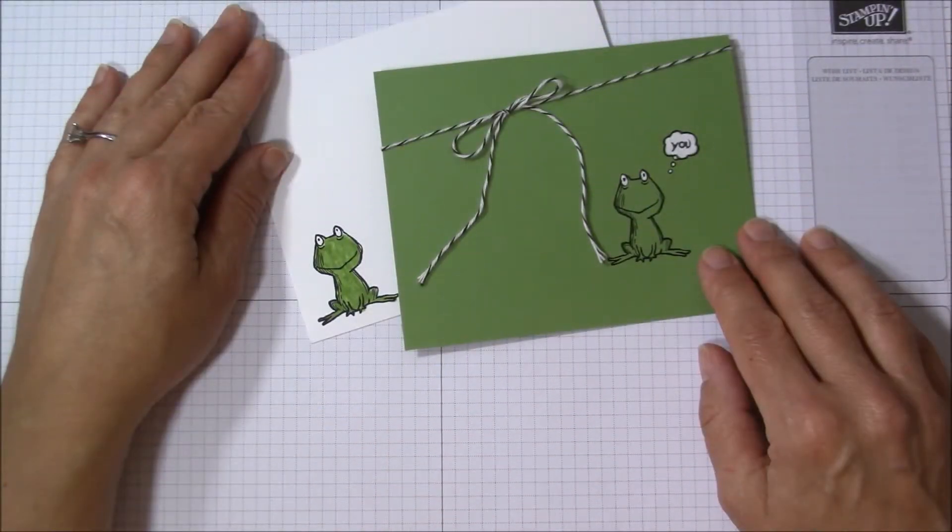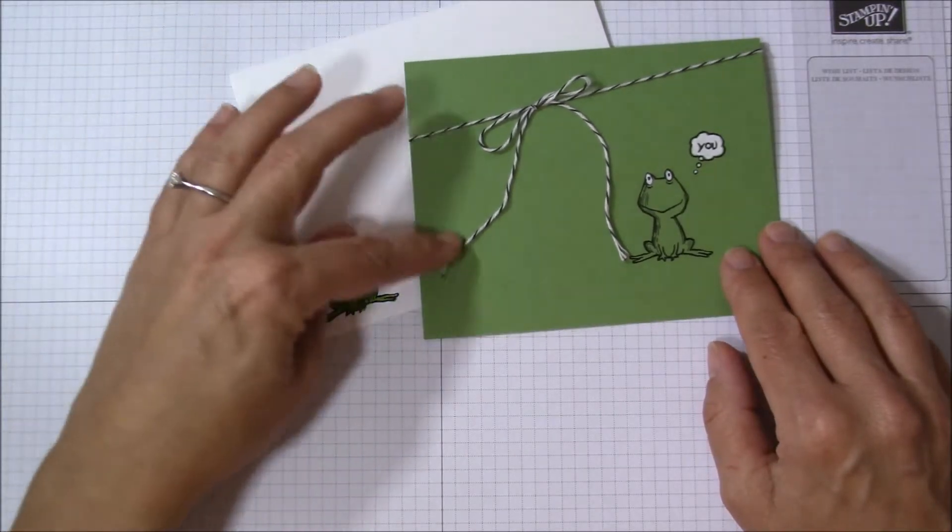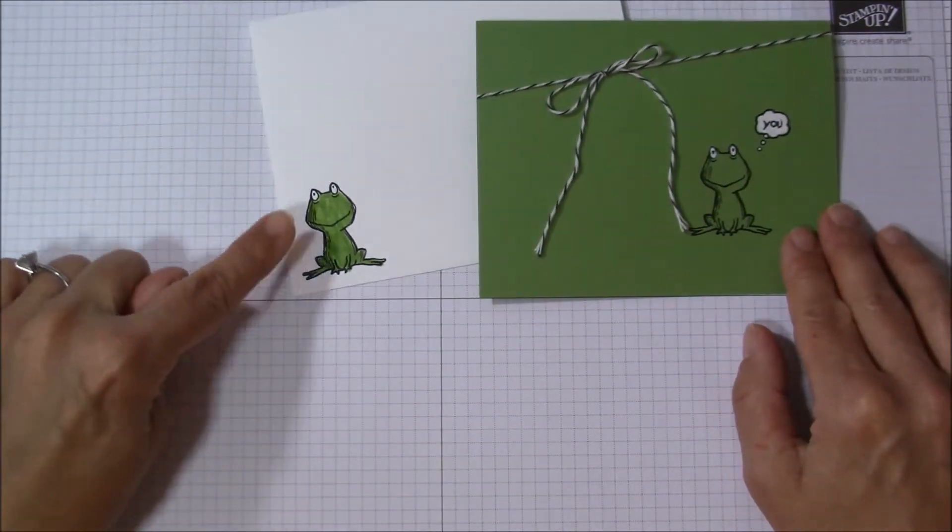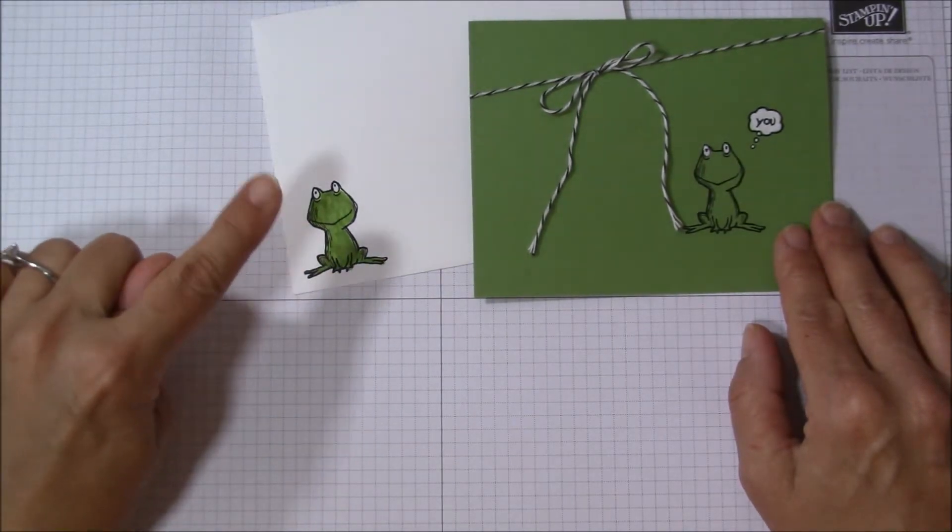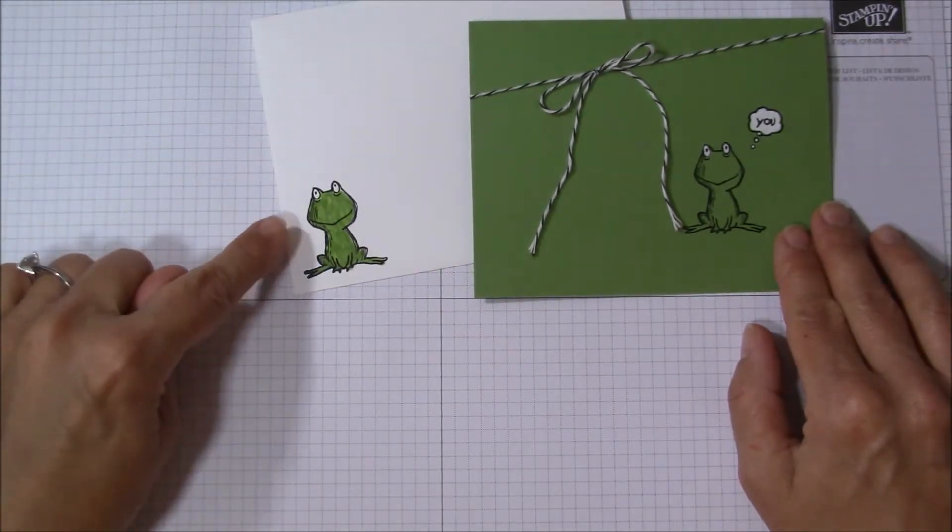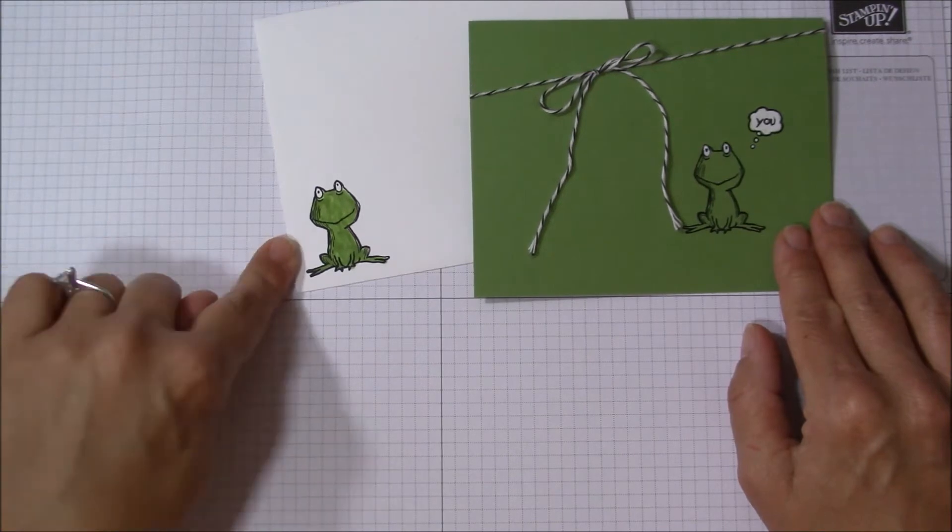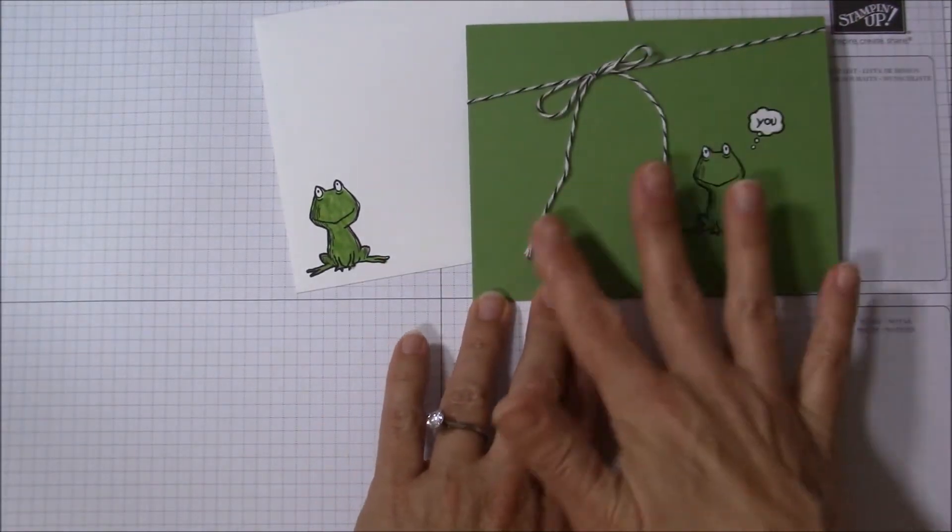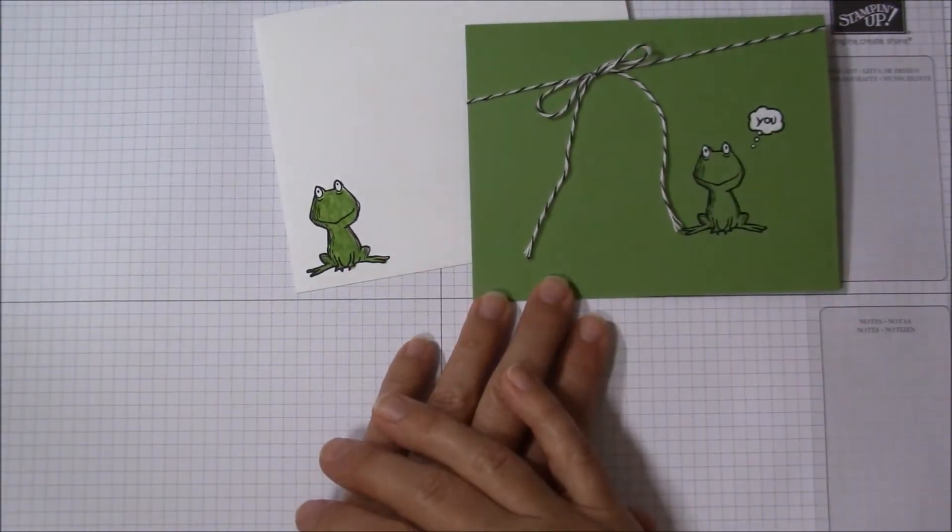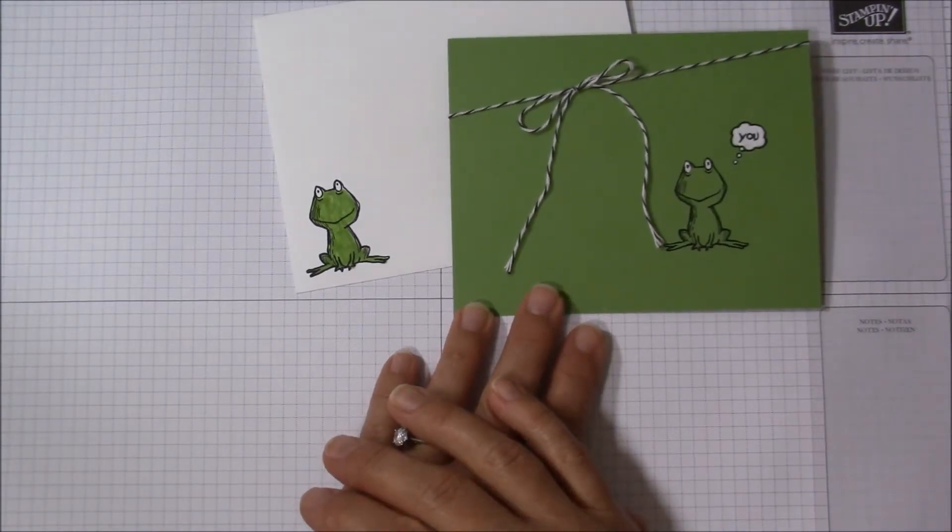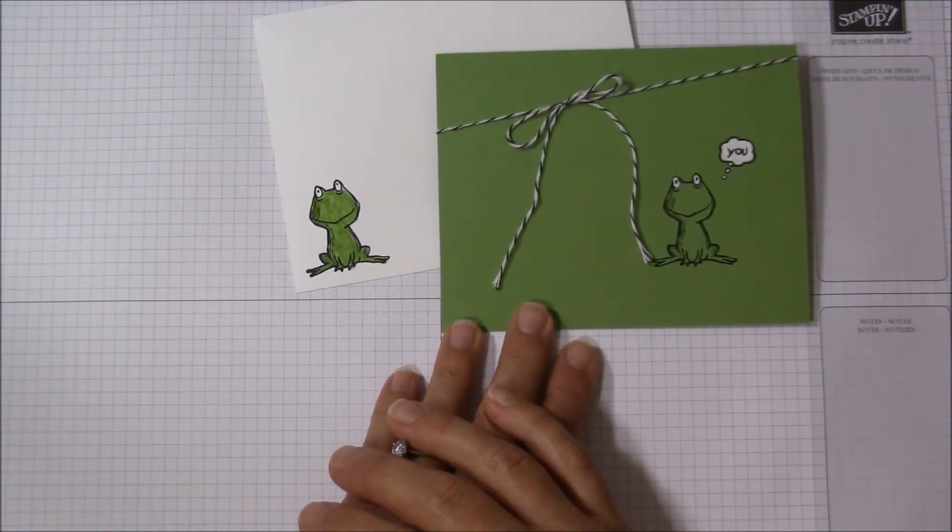So there you go—a super cute and simple card, easy to make and put together. If you don't want to do this on the envelope, just grab a piece of whisper white cardstock, stamp them on white and layer it on the front to get a nice contrast there, just with a little layering. So another option for just a quick, easy card.